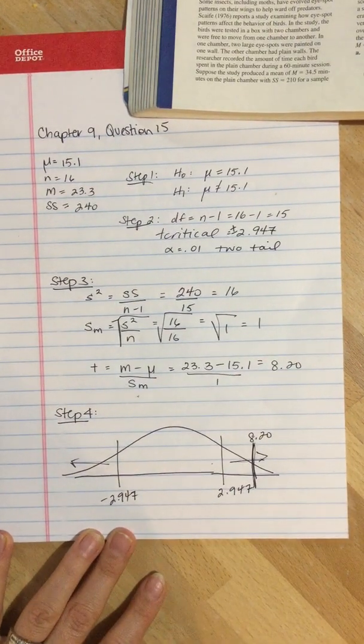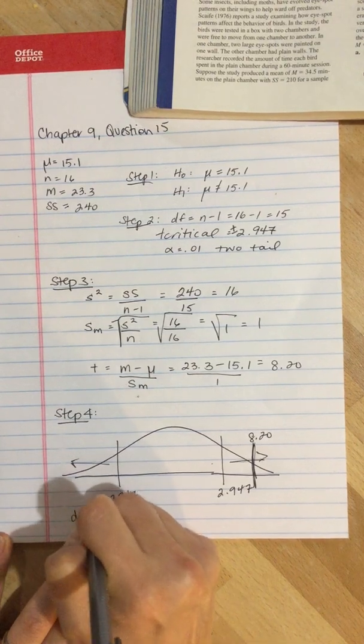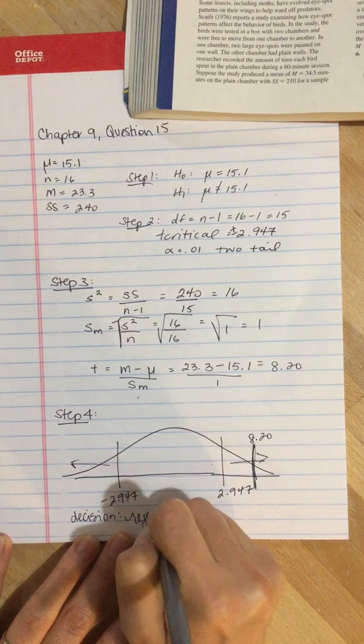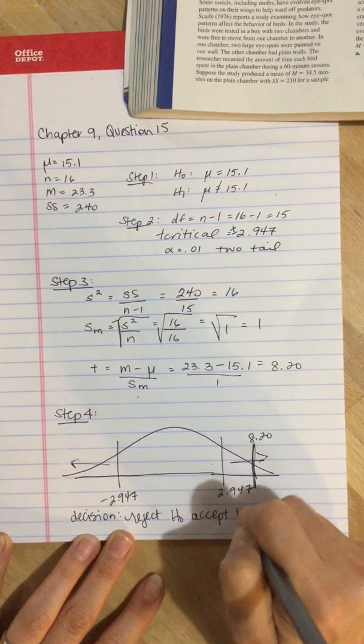So our decision is reject the null and accept the alternate.